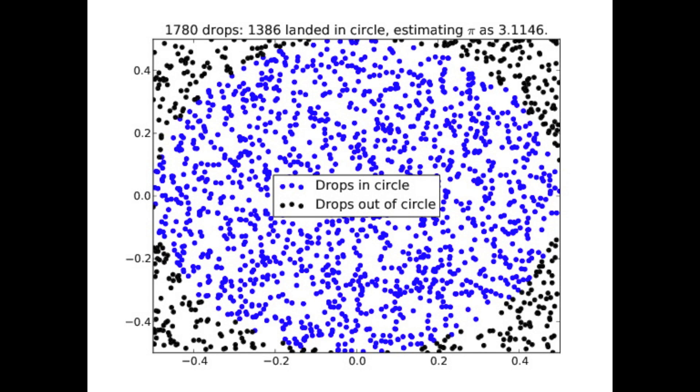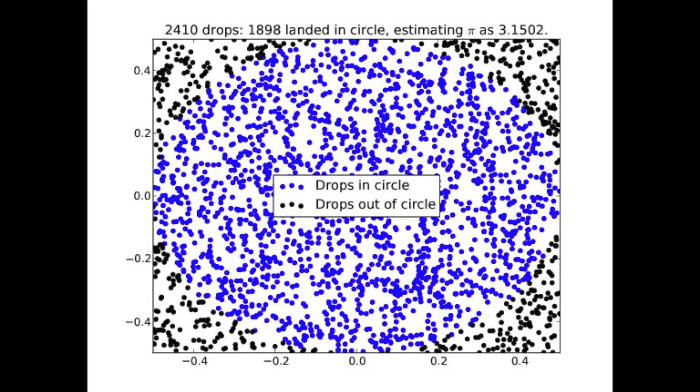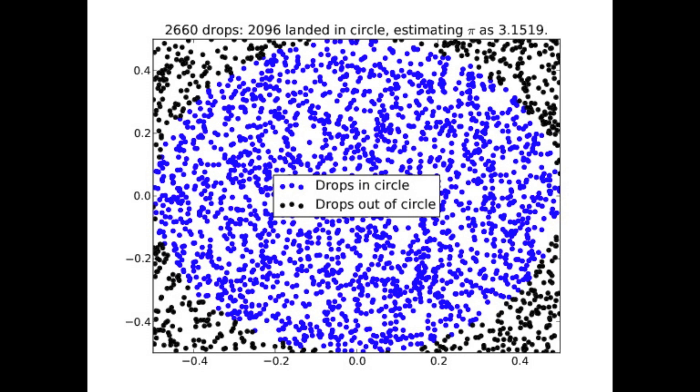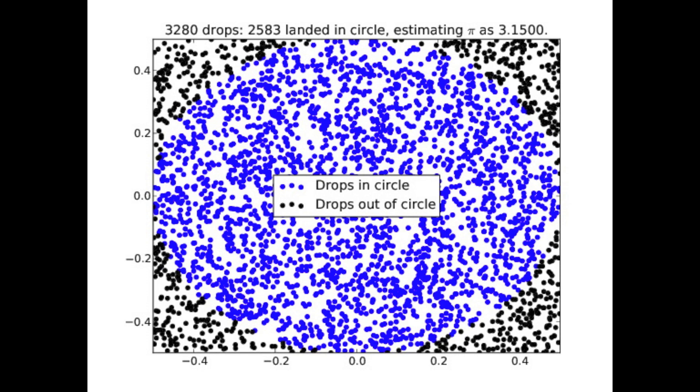And we see that pi is getting closer and closer. The estimate of pi is getting closer and closer. And as the raindrops keep falling, you can really see the circle starting to be inscribed.